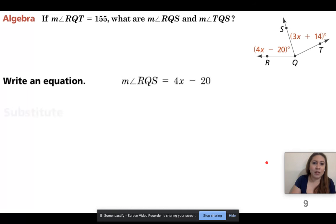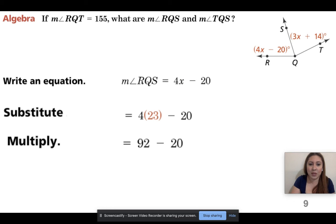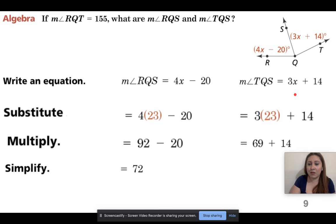All right, so I want to solve for RQS. So I'm going to put 23 into this x right here. So I'm going to substitute it. 4 times 23 is 92. 92 minus 20 is 72. So RQS, that's 72. Now let's do TQS.